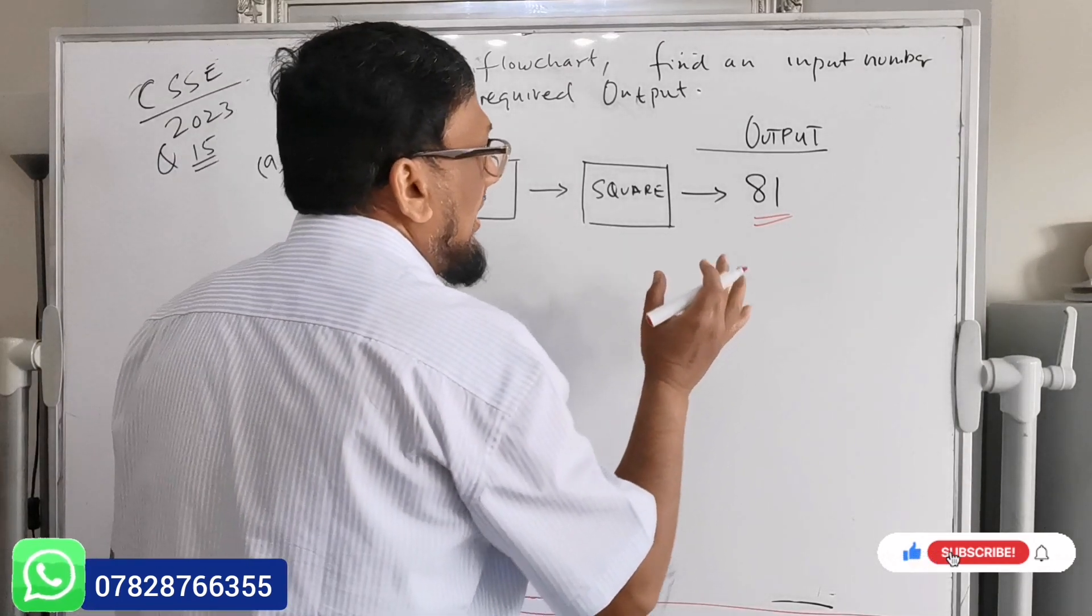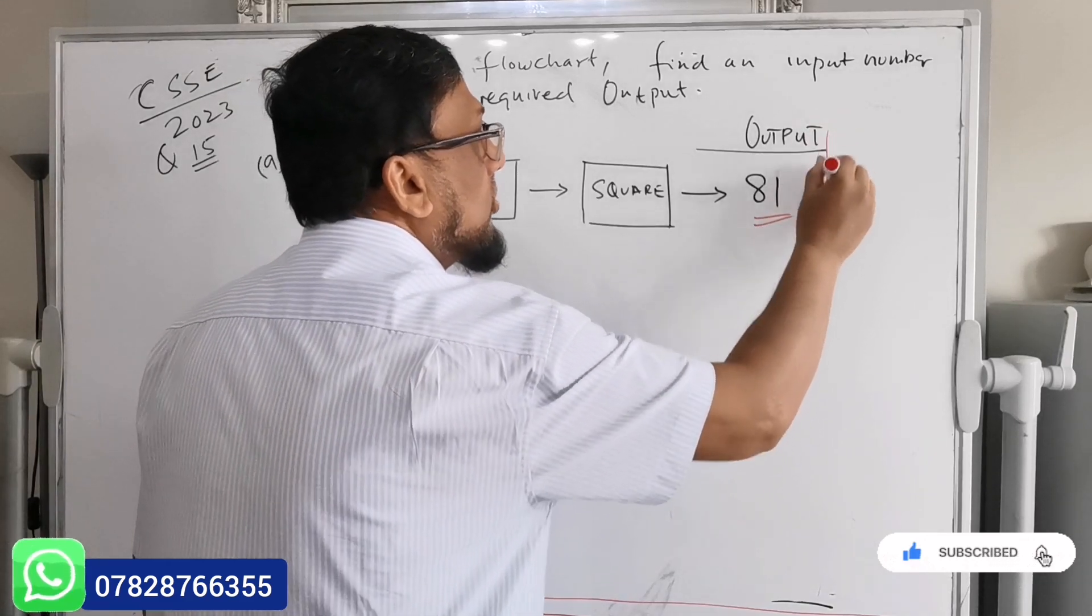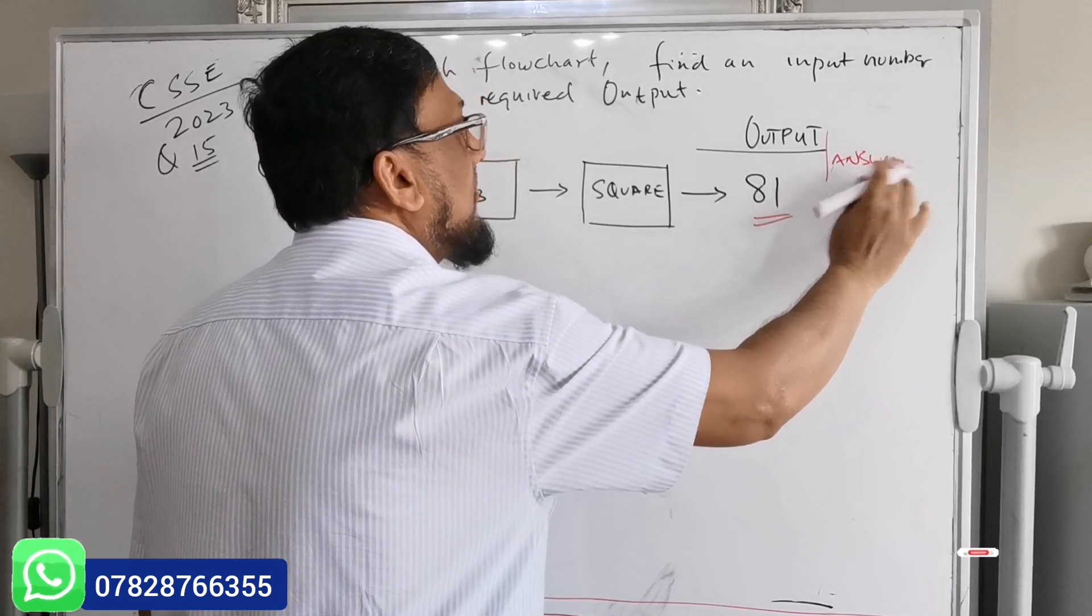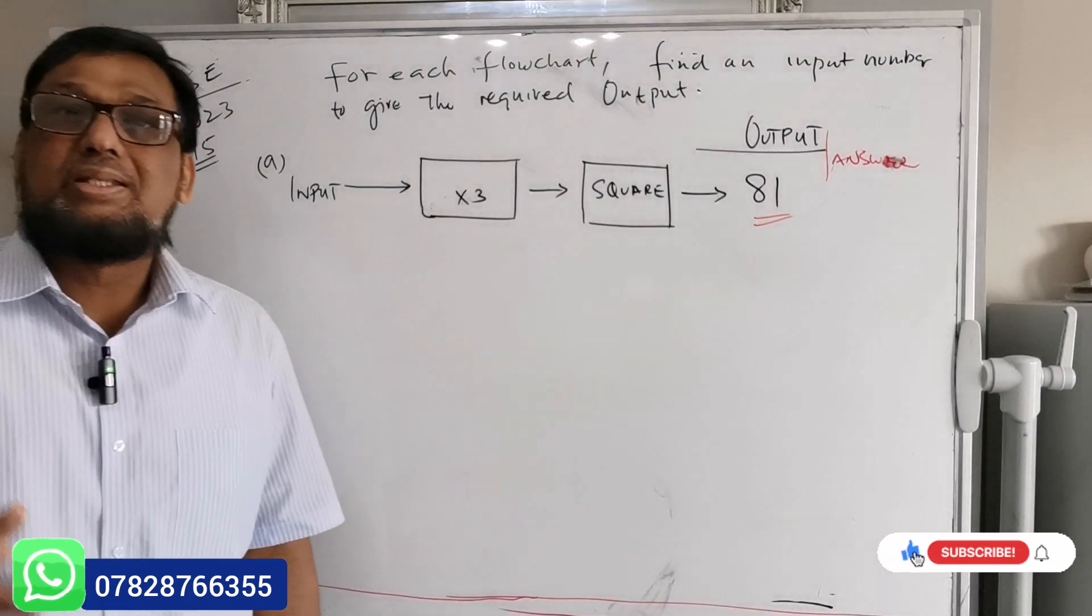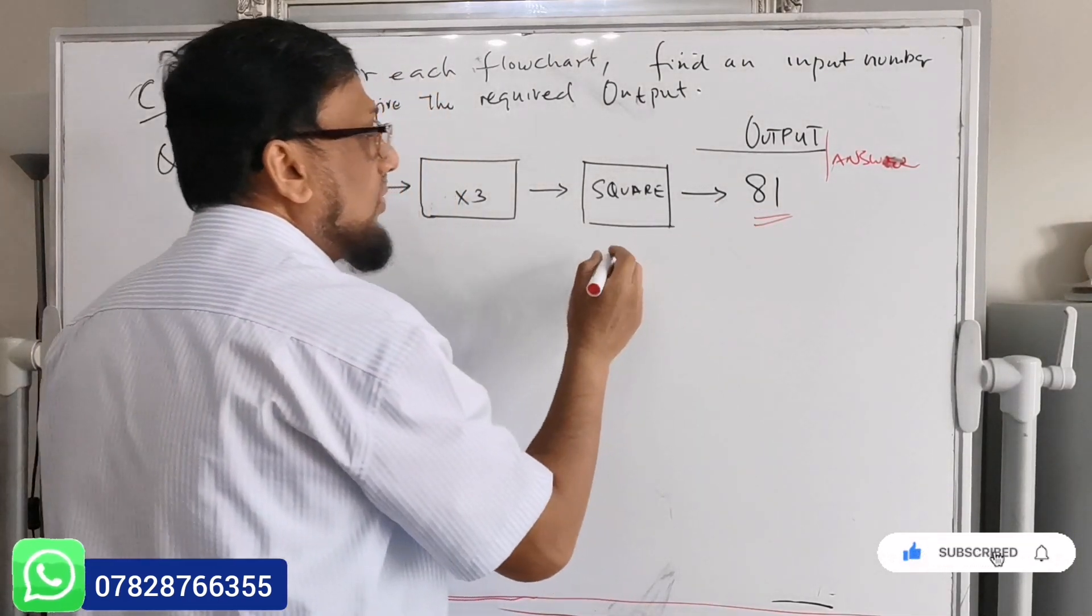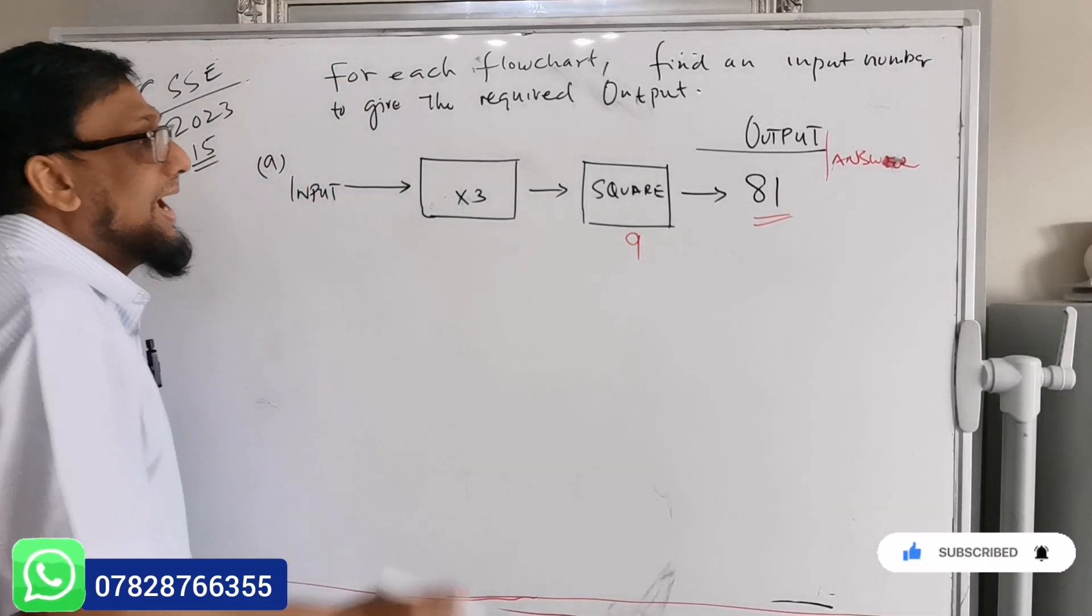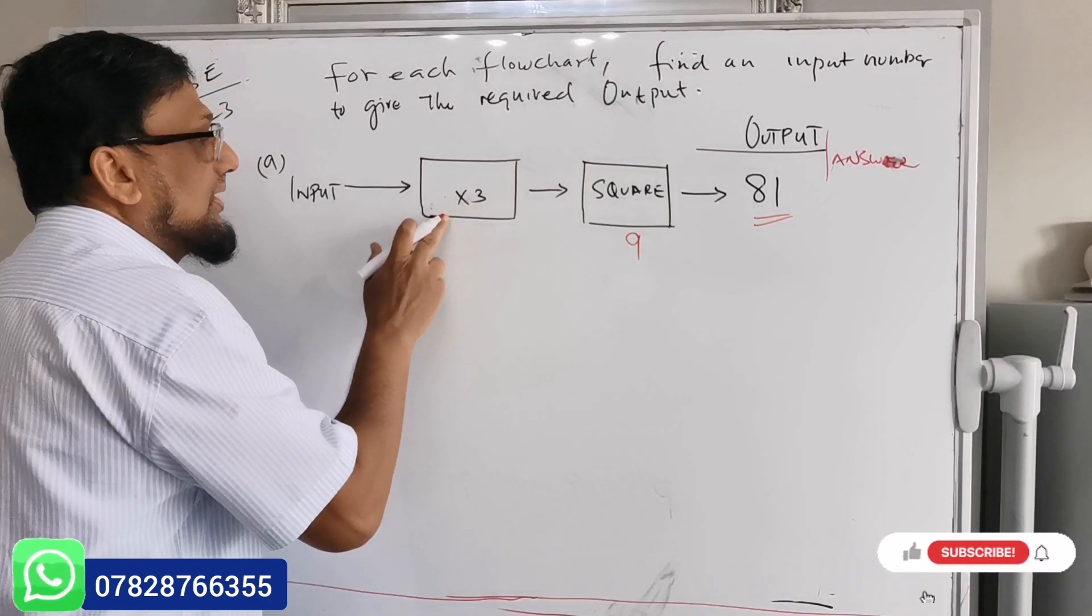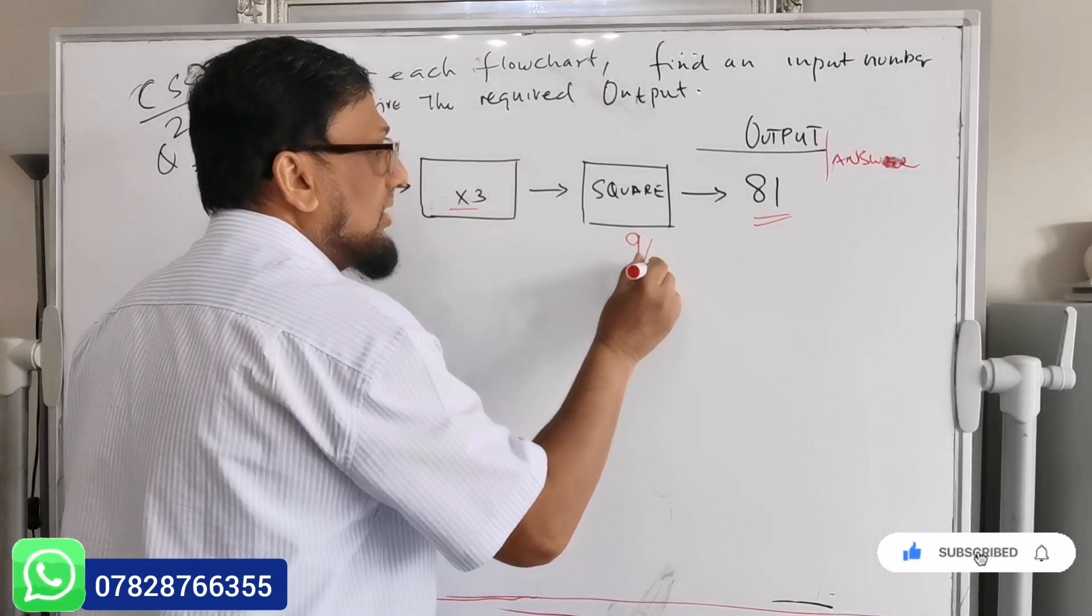So what you're going to do, the best thing is if you know the output or you know the answer, what I said to you is you go for the backward calculation. Backward calculation means the square root of 81 is 9, very simple.